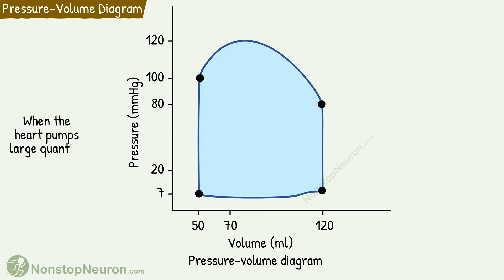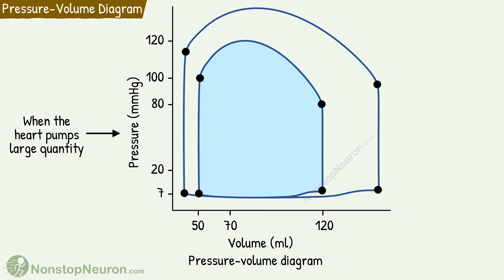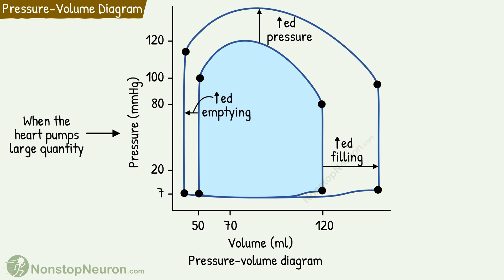When the heart pumps a large quantity of blood, this loop expands. First, during increased pumping, the ventricle fills with more blood during diastole, so the loop expands on the right. Second, the pressure generated during this is also high, so the top part of the loop also rises. Also, the ventricles may get more empty than usual, so the loop may extend on the left as well. Thus, the area of the loop increases, which represents increased net external work output of the ventricles during such conditions.